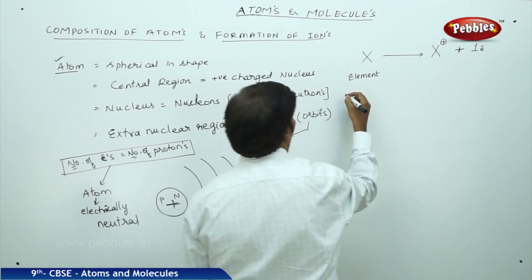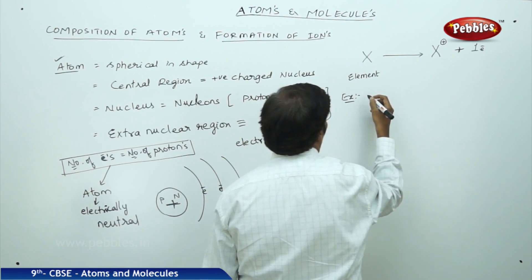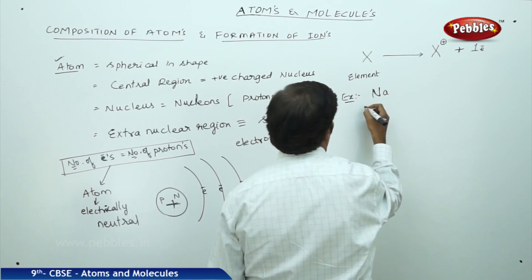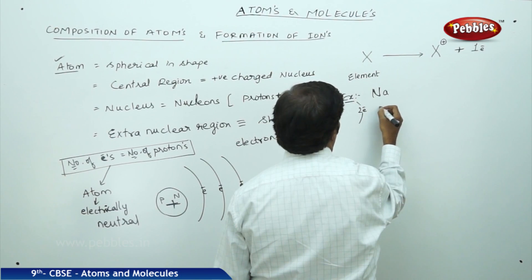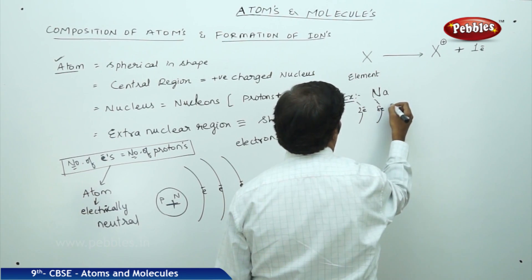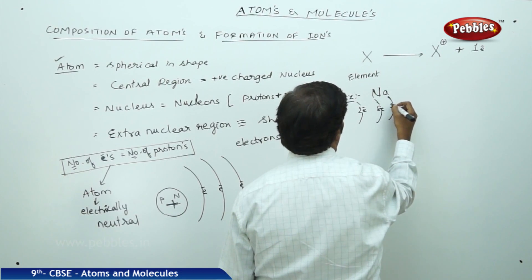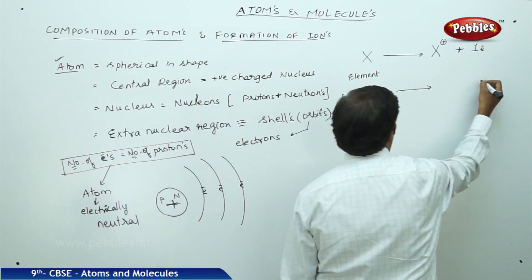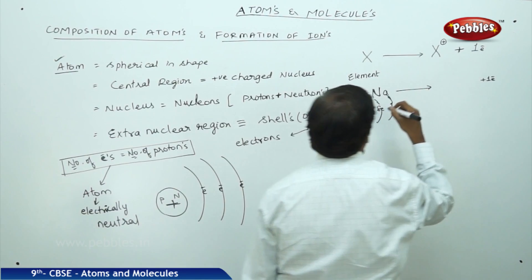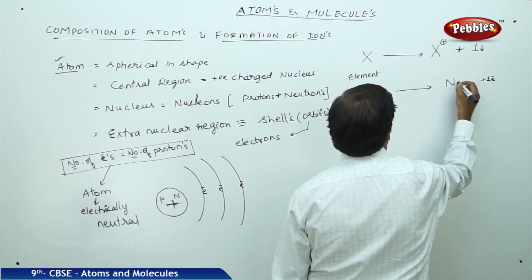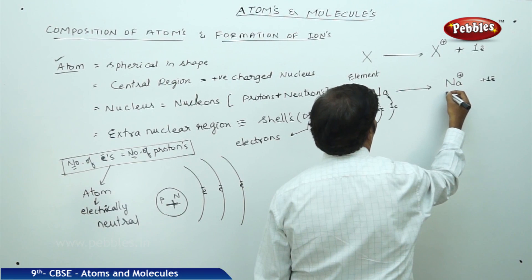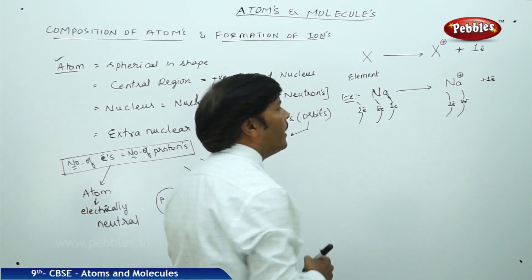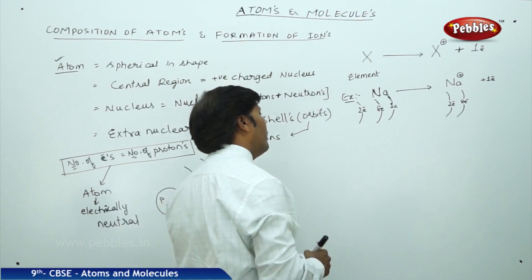For example, take sodium — it contains 11 electrons: 2 in the first orbit, 8 in the second orbit, and 1 electron in the valency shell. When sodium loses one electron, it acquires one unit of positive charge and now contains 2 electrons in the first orbit and 8 in the second orbit — one unit less in total.